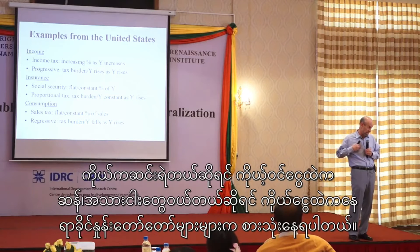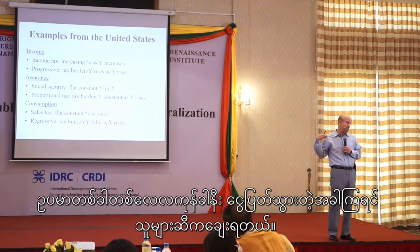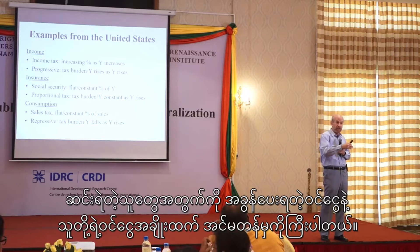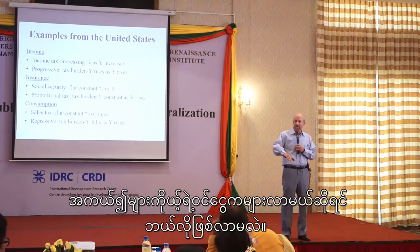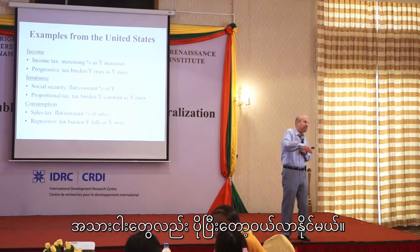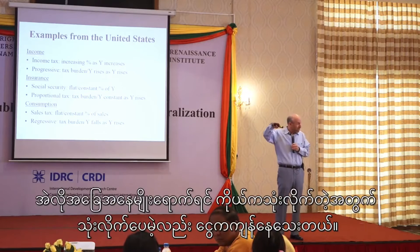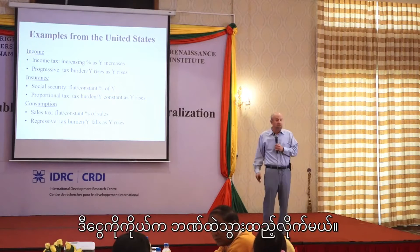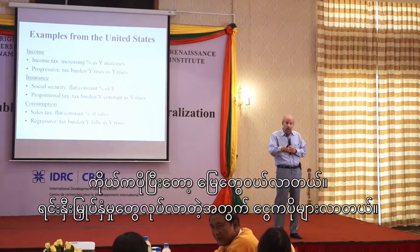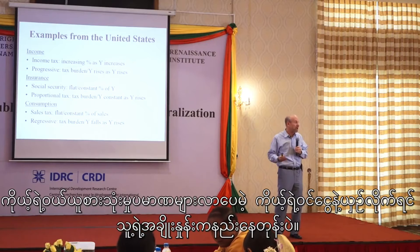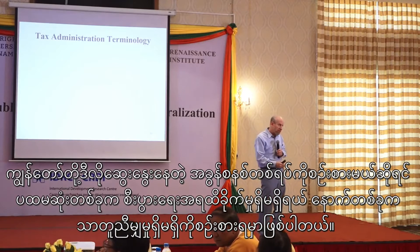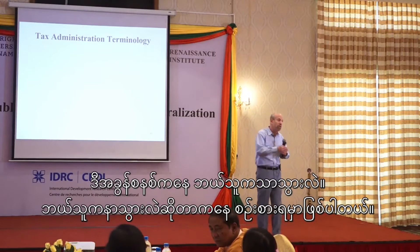A regressive tax means as your income goes up, the share of your income in taxes actually goes down. Consider a 5% sales tax — the same rate for any purchase. But if you're very poor, you consume all of your income — maybe even more. So the tax you pay on consumption is a very large part of your small income. But as your income rises, you have extra — you don't consume everything. You put money in the bank, make investments, buy land. Even though you're consuming more, the tax as a share of much larger income is actually smaller.